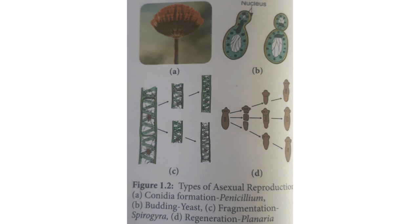There are different types of asexual reproduction that take place in plants. The first one is conidia formation. Conidia are asexual spores which are produced in fungi called Penicillium and Aspergillus. It is a type of asexual reproduction which occurs through conidia in Aspergillus and Penicillium.